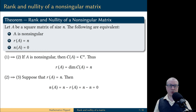Next, let's prove that statement 2 implies statement 3. We are going to assume that the rank of A is equal to N. Then the nullity of the matrix A can be computed as N minus the rank of A.